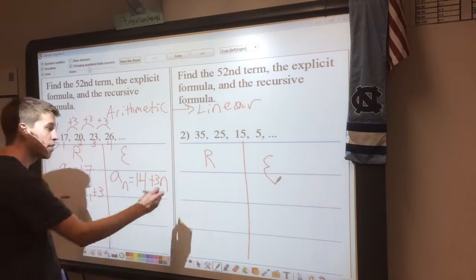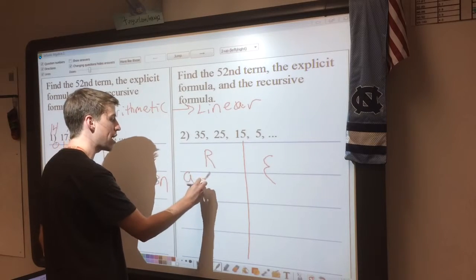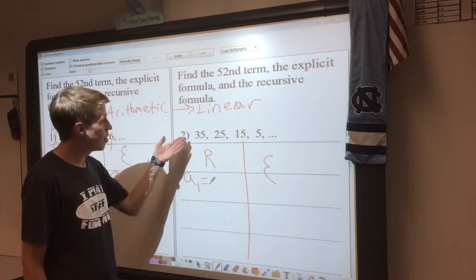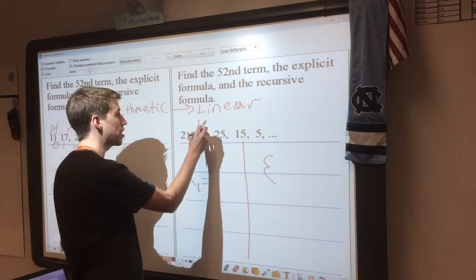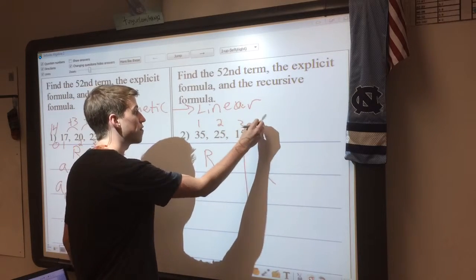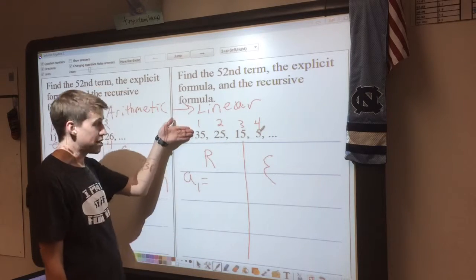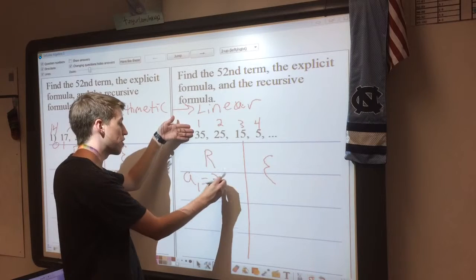We need the initial condition, which just is a fancy way of saying, what is the first number, the first term, in my list of numbers? So I'm going to go ahead and label it 1, 2, 3, 4. My first term, my second term, my third term, my fourth term. I see clearly my first term is 35.